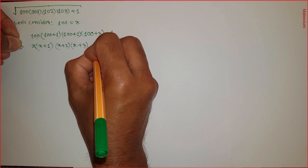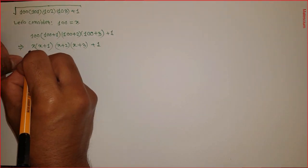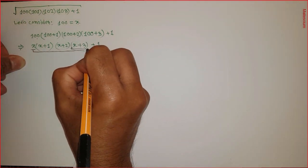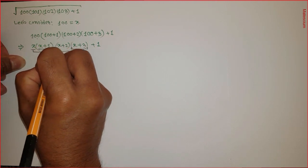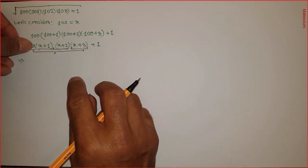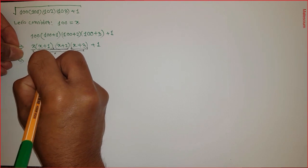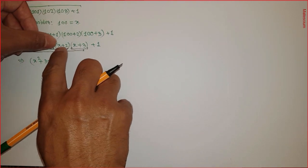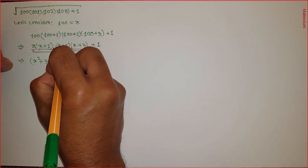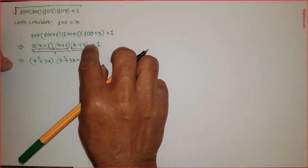At this point I want to multiply x with x plus 3, and multiply x plus 1 with x plus 2. Multiplying x times x plus 3 gives x squared plus 3x. Multiplying x plus 1 times x plus 2 gives x squared plus 3x plus 2. The remaining plus 1 stays the same.